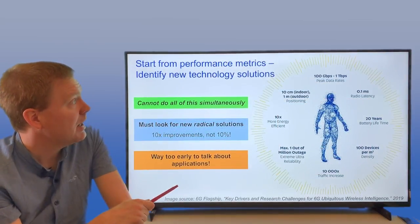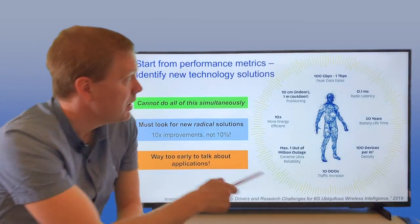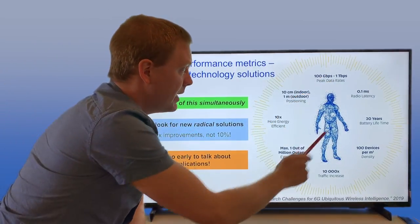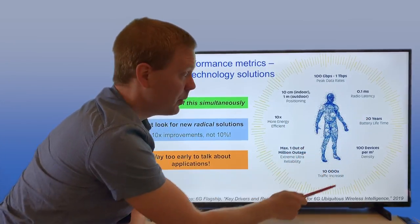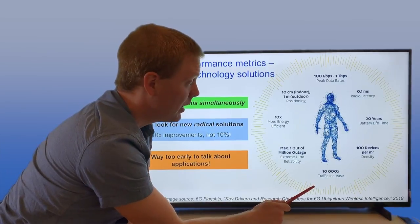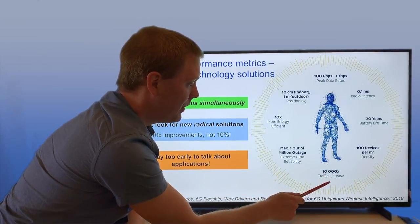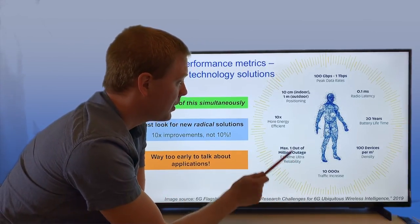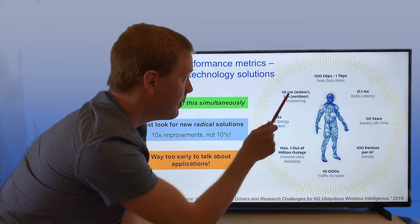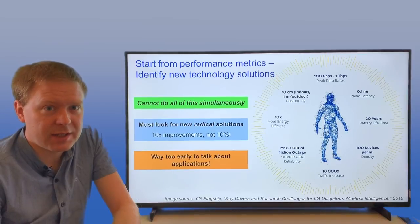Here are some performance metrics that you can find in 6G flagship's white paper from last year: having higher peak data rate, lower radio latency, better battery life, more density in terms of number of devices per square meter or even cubic meter, more traffic per square kilometer, having extreme ultra-reliable systems, more energy efficiency, and better positioning. All these things can be done by combining more advanced technology in terms of hardware with better signal processing.